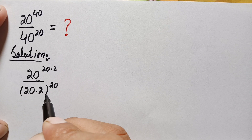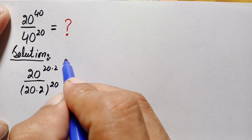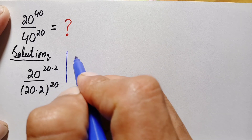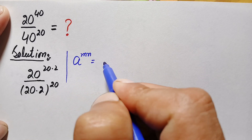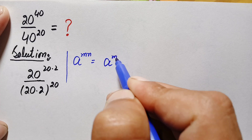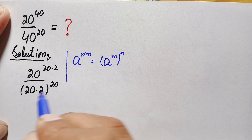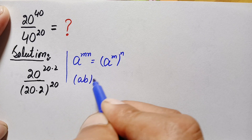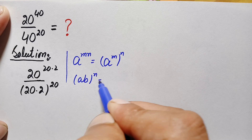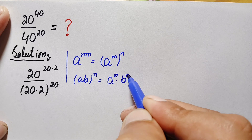In the numerator and denominator we will use two different exponential identities. In the numerator we use: a raised to power m times n equals a raised to power m, whole raised to power n. In the denominator we use: a times b, whole raised to power n, equals a raised to power n times b raised to power n.